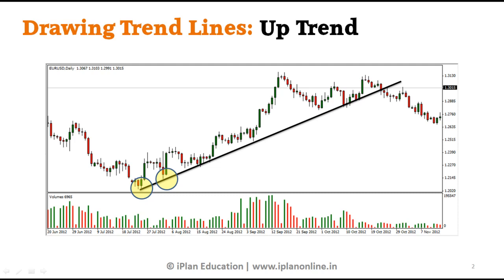And when we see here there was another low formed. If suppose we do not know at this level what is going to happen next, and we have actually drawn a trend line — after a few days this trend line actually works for us. We see the price falls below the trend line and bounces back. And we see another fallback at the trend line, and it again falls back here.